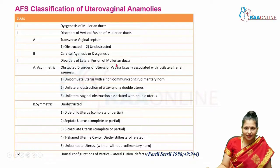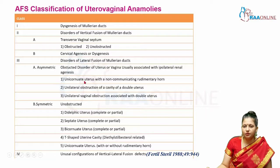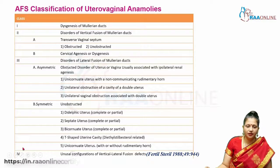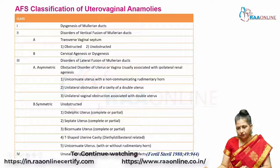Class 3 covers disorders of lateral fusion of the Mullerian ducts, which can be asymmetric or symmetric. Asymmetric defects include unicornuate uterus with a non-communicating horn, unilateral obstruction of the cavity, and unilateral vaginal obstruction associated with a double uterus. Symmetric defects include didelphys, septate, bicornuate, and T-shaped uterine cavity — the latter mostly iatrogenic due to diethylstilbestrol — or a unicornuate uterus with or without a rudimentary horn. Class 4 includes unusual mixed configurations of vertical and lateral fusion defects.